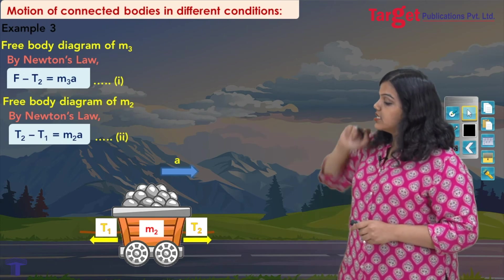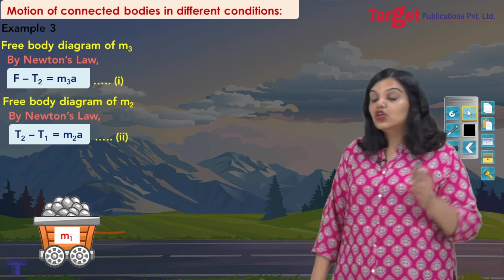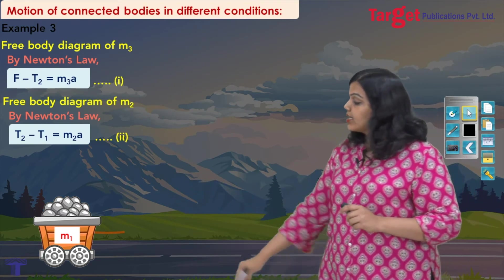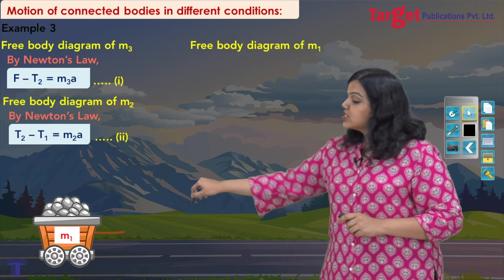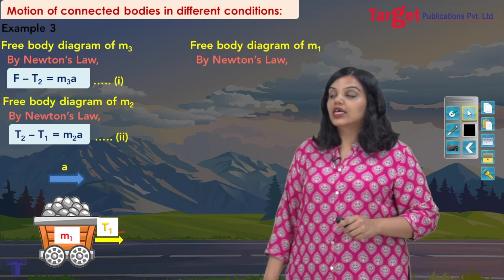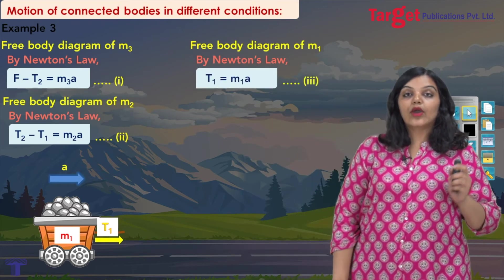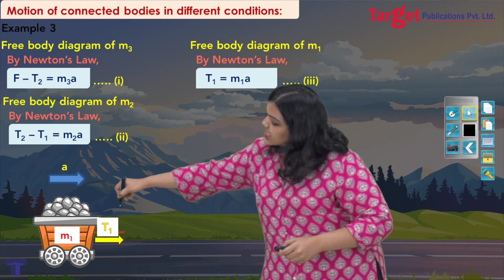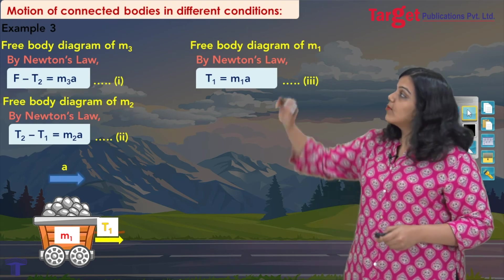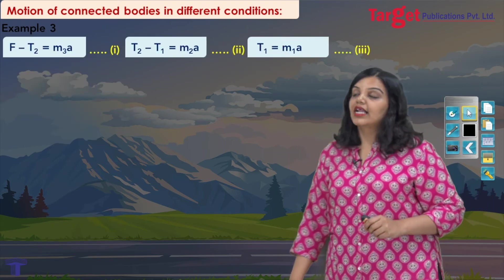Finally, looking at object m1: the only force acting on m1 is tension T1 acting to the right. From Newton's law: T1 equals m1a, with T1 positive because it acts to the right. I now have all three equations and will use simple algebra to solve them. I substitute the expression for T1 from equation 3 into equation 2.